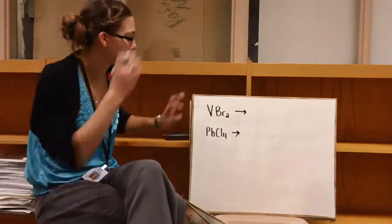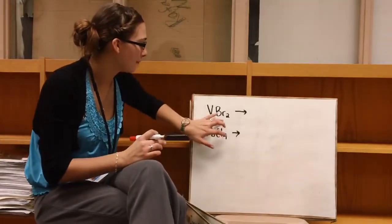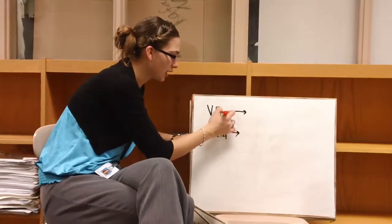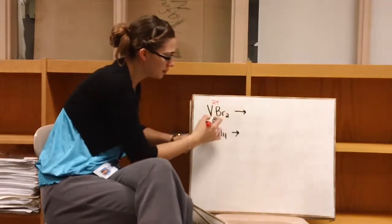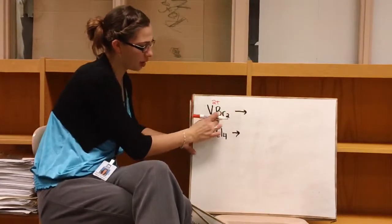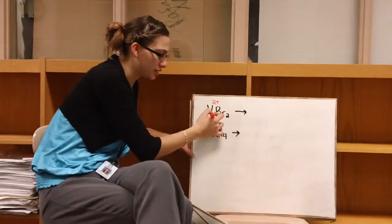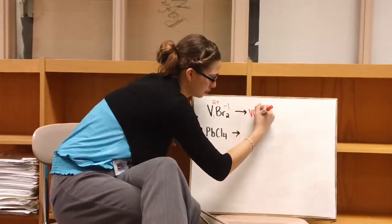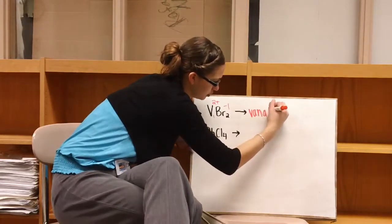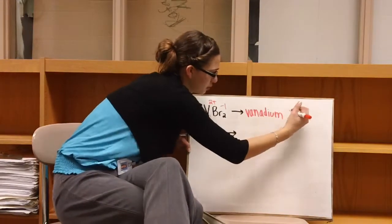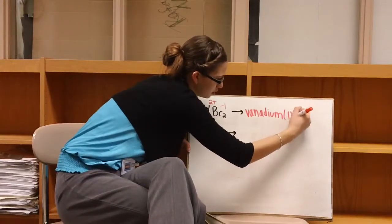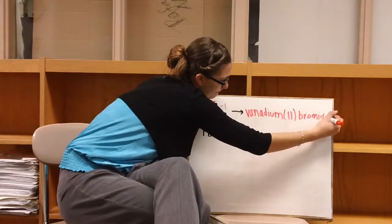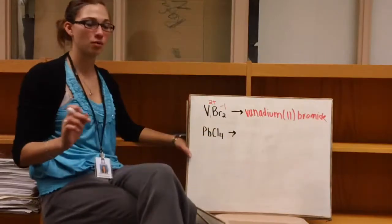Let's try two more. We have VBr2. So if we crisscrossed our charges originally, we know that our two would be the charge of vanadium, and that our charge for bromine would be one, since there's a one here. So we get vanadium(II) bromide.